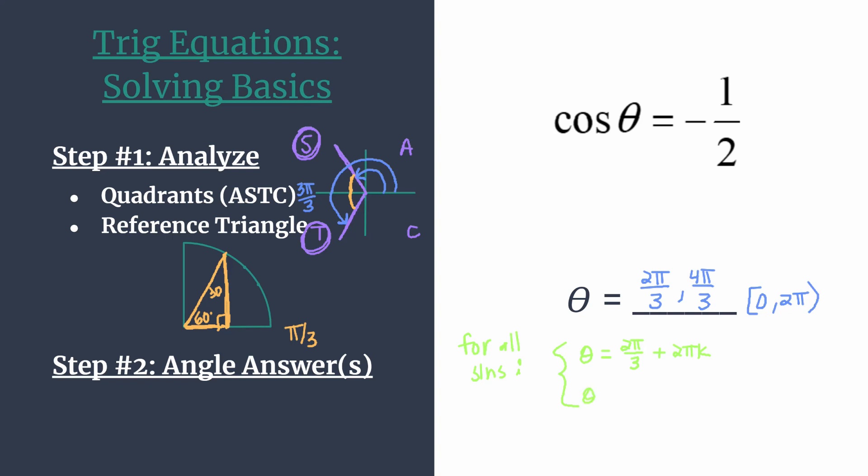And we can do the same thing for 4 pi over 3. So we'll say theta also can be 4 pi over 3 plus 2 pi k. You may use any other variable. N is another common one. So it's just whatever you like.